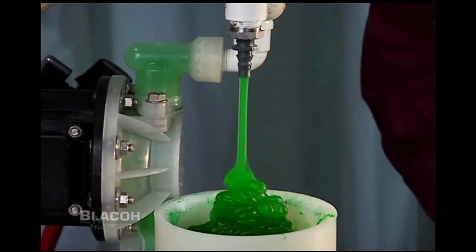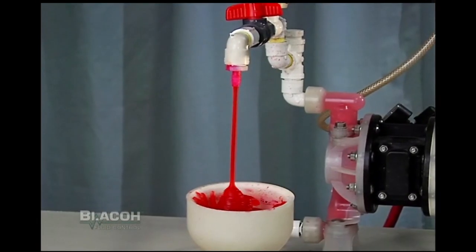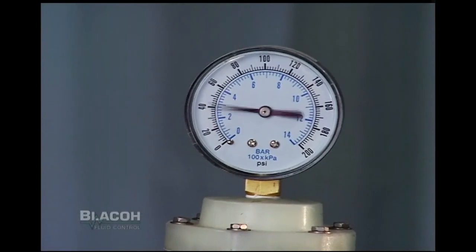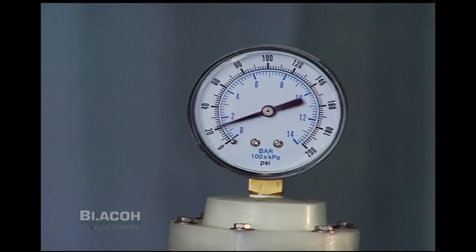One side is pumping with the benefit of a pulsation dampener, the other without. The side without the pulsation dampener creates a pulsating flow, and that flow can be observed on the gauge as a rise and fall of pressure fluctuating with each stroke of the pump.